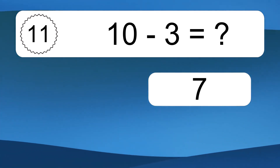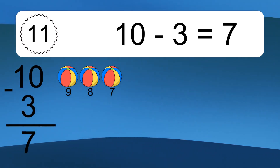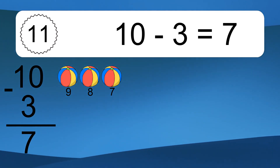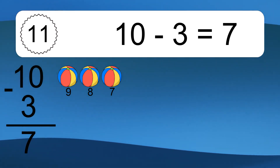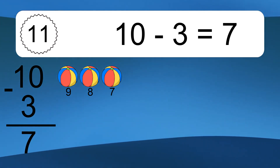10 minus 3 equals what? 10 minus 3 equals 7. Let's count it: 9, 8, 7.